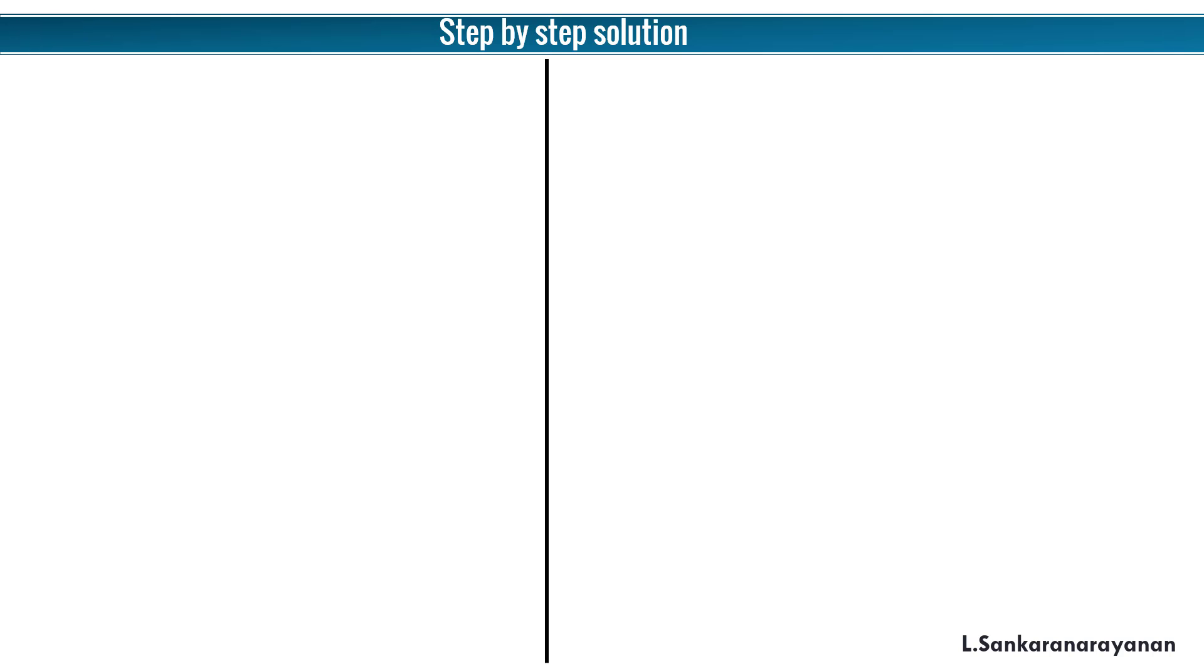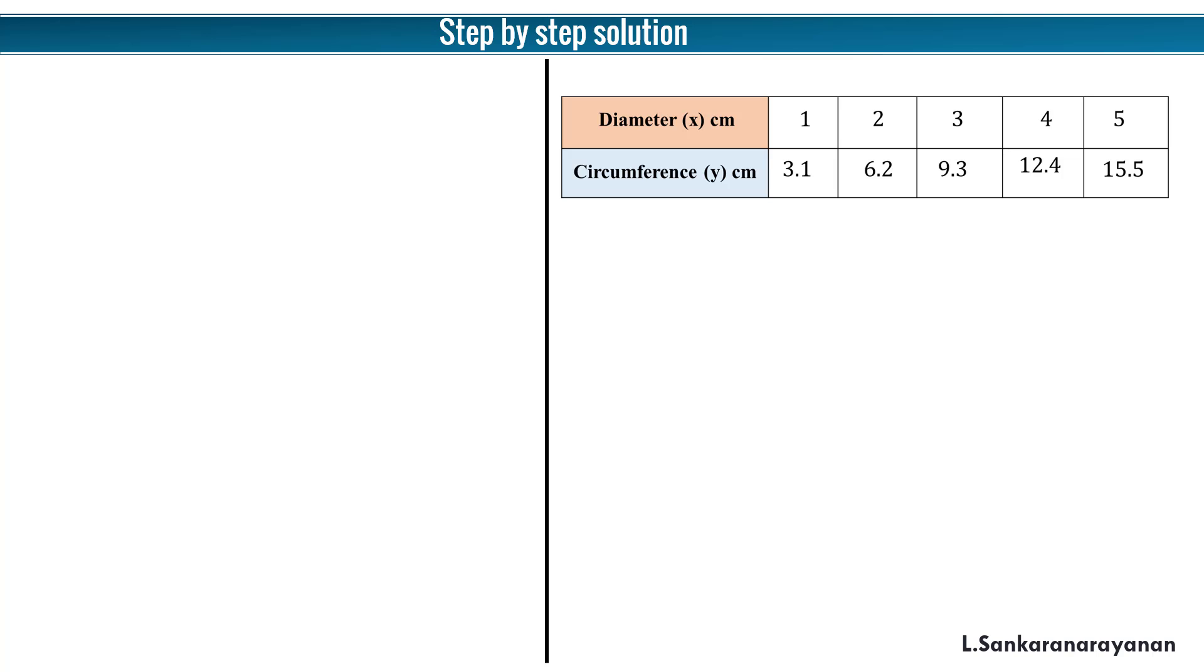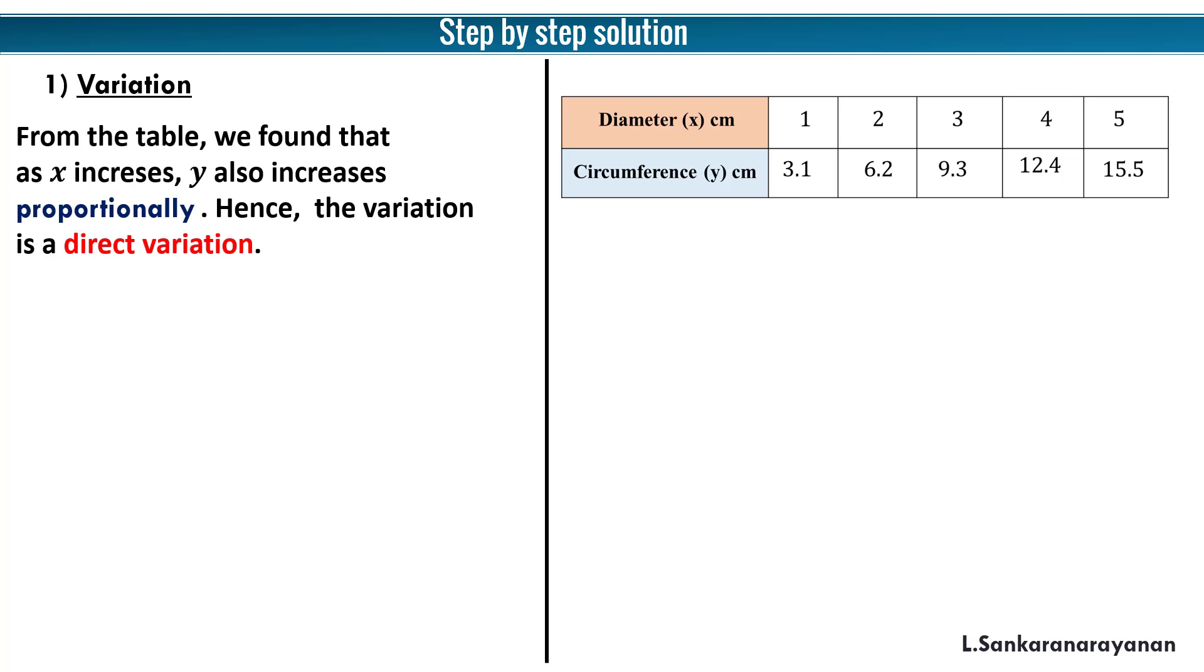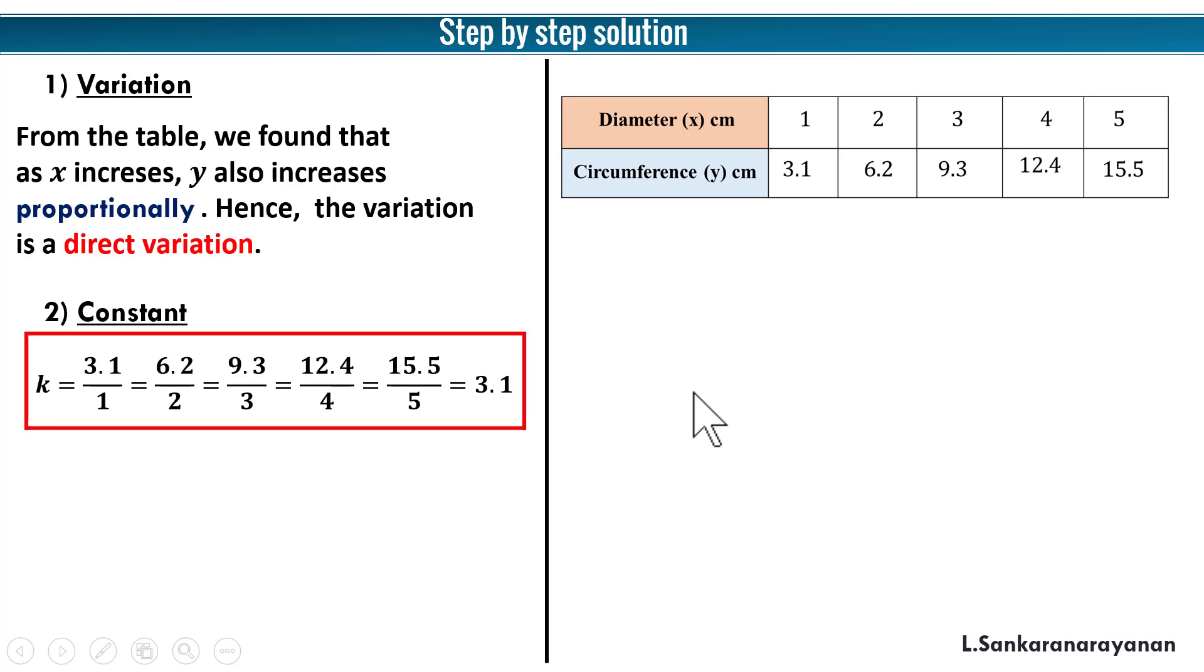Step by step solution. To understand where to start and how to proceed, we use this step by step solution. First one is we are going to identify the type of variation. You see that from the table we found that as x increases, y also increases proportionally. Hence the variation is a direct variation. Next one is constant. We have already seen how to find the constant: this y value by x value. We can check whether it is correct or not throughout the table. So k is equal to 3.1 by 1, 6.2 by 2. Throughout the table it is 3.1, so k is equal to 3.1.